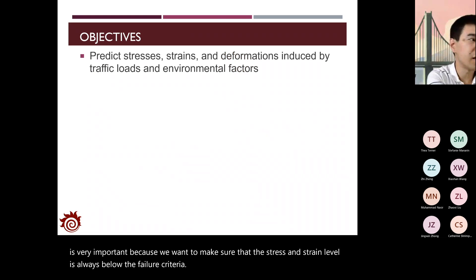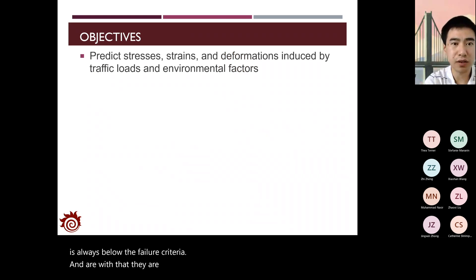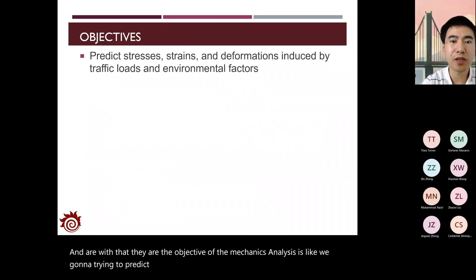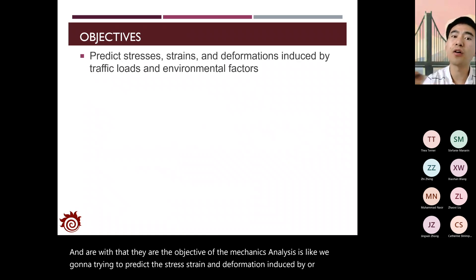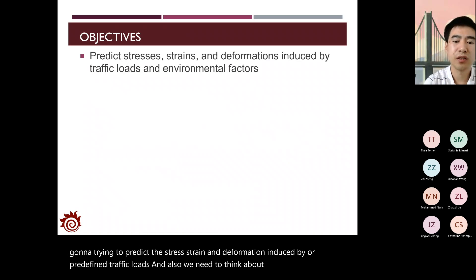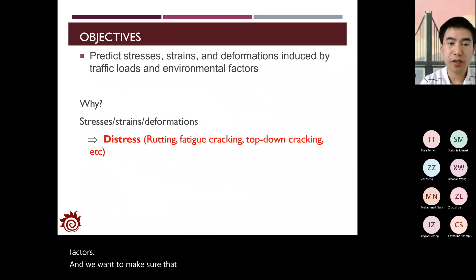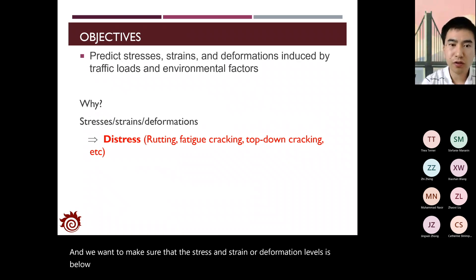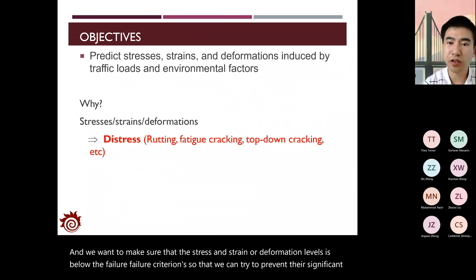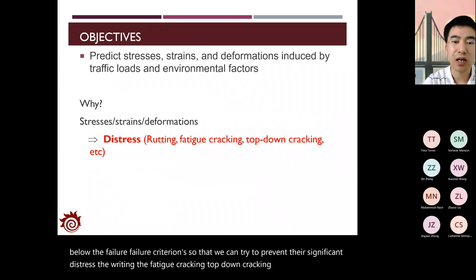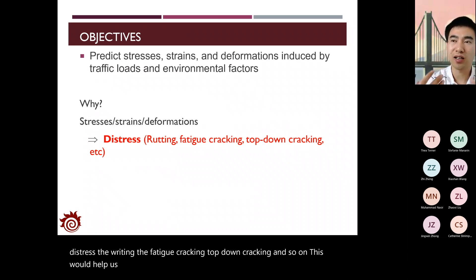The objective of the mechanics analysis is to predict the stress, strain, and deformation induced by predefined traffic loads, also considering environmental factors. We want to ensure that stress, strain, and deformation levels are below the failure criterions to prevent significant distress like rutting, fatigue cracking, top-down cracking, and so on, helping maintain acceptable performance of the pavement structure.